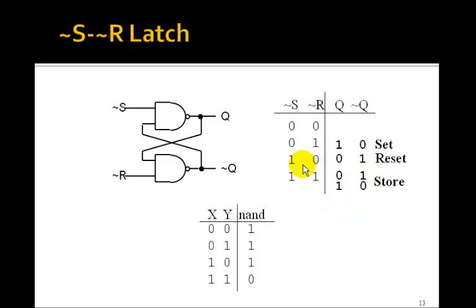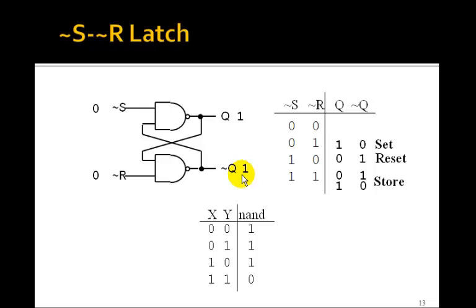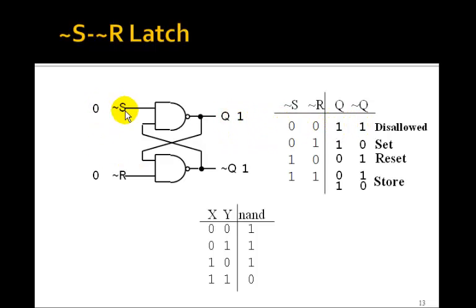The only case we haven't looked at is the 0,0 state. Let's make both NOT-S and NOT-R 0. Any 0 input is going to give a 1 for the output, so in this case both Q and NOT-Q are 1. This doesn't look good — I've called this NOT-Q, and we sort of expect these to be opposite. But in this case they're both 1. We're going to call this the disallowed state, even though if we really put 0 and 0 coming in, we'll get 1 and 1 at the output.